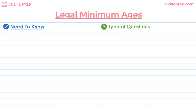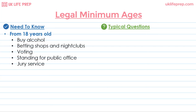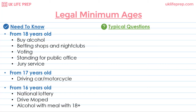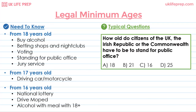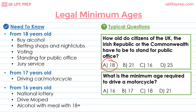There are usually always questions on legal minimum ages. From the age of 18, you can buy alcohol, go into betting shops and nightclubs, vote, stand for public office, and be called for jury service. From the age of 17, you can drive a car and motorcycle. From the age of 16, you can take part in the national lottery, drive a moped, and drink alcohol at a pub or restaurant if accompanied by someone over the age of 18. A typical question: the minimum age required to drive a motorcycle is 17.